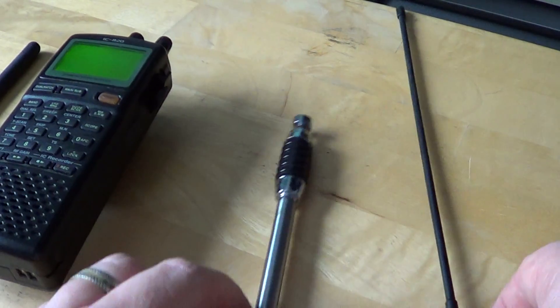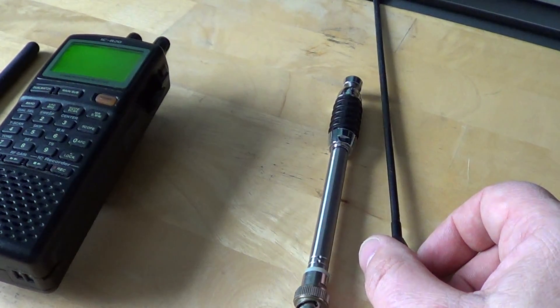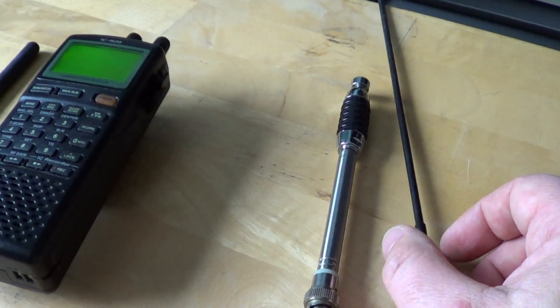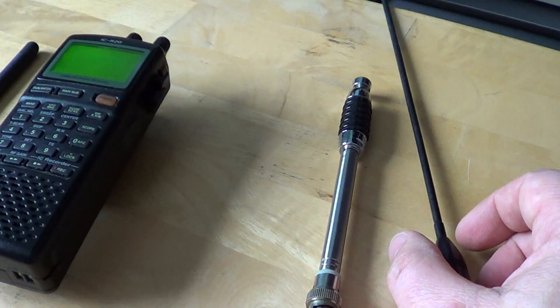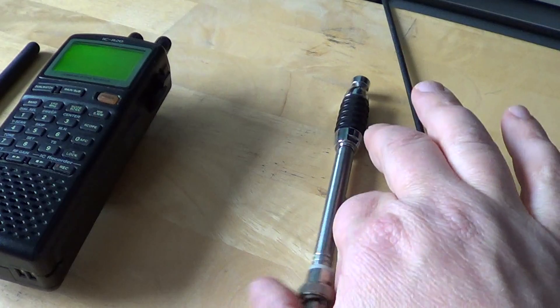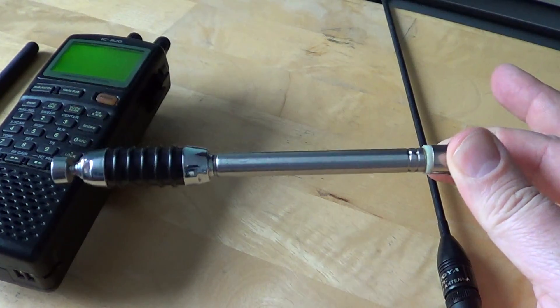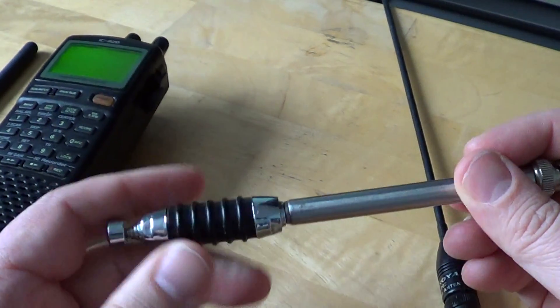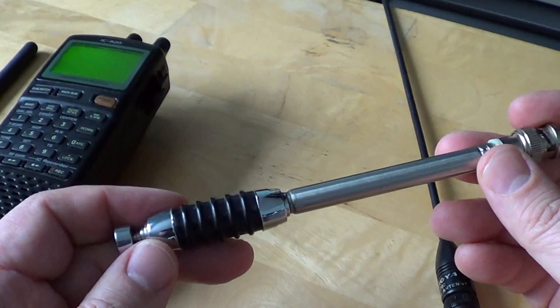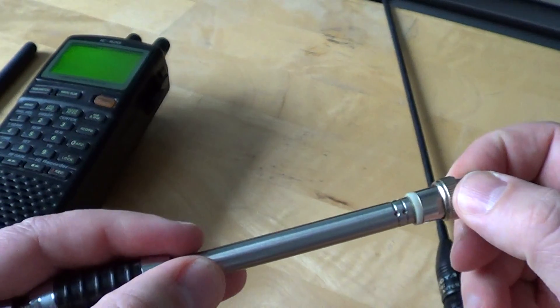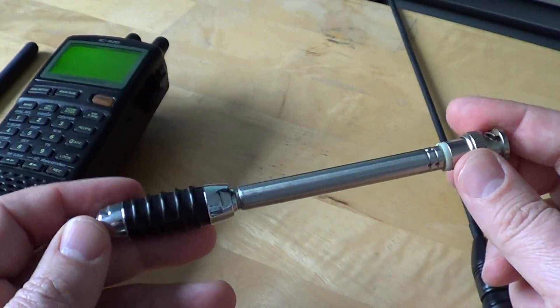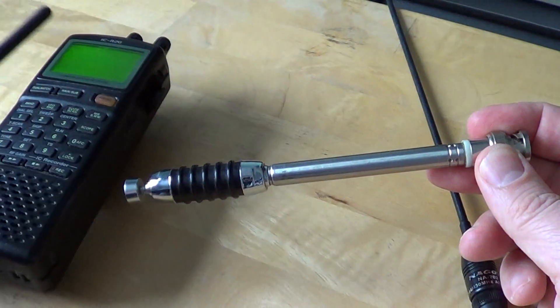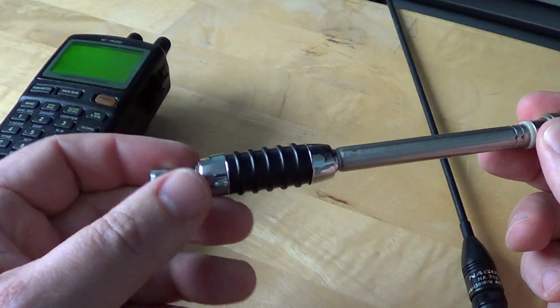One thing you can do is search the web or go to any electronics store that sells communication equipment and get antennas that will have different ranges. One that I like a lot is the telescopics that are wide band, and I like those for one major reason.